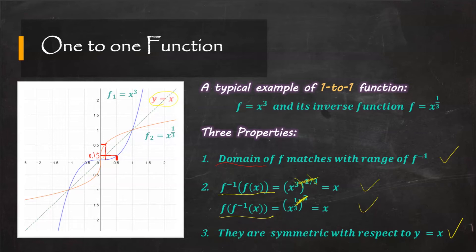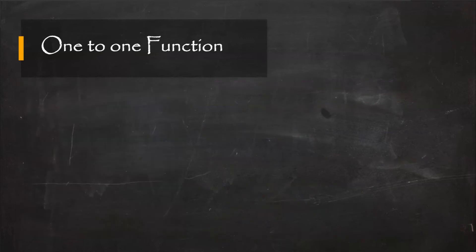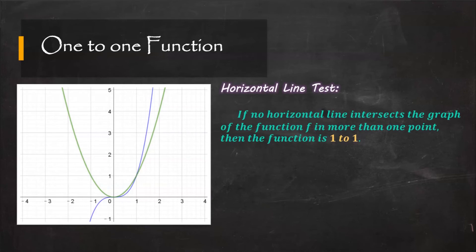Here's my second question: how do we tell if a function is one-to-one? We can use a test called the horizontal line test. If no horizontal line intersects the graph of function f in more than one point, then the function is one-to-one. If the intersection is more than one, it's not going to be a one-to-one function.